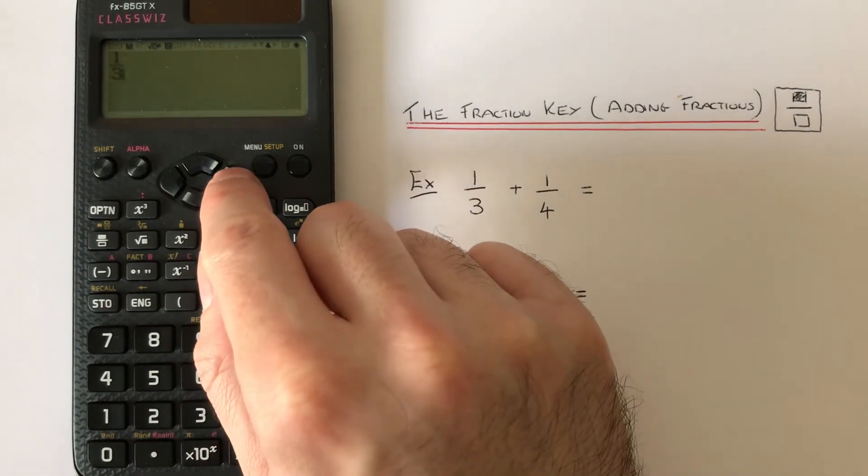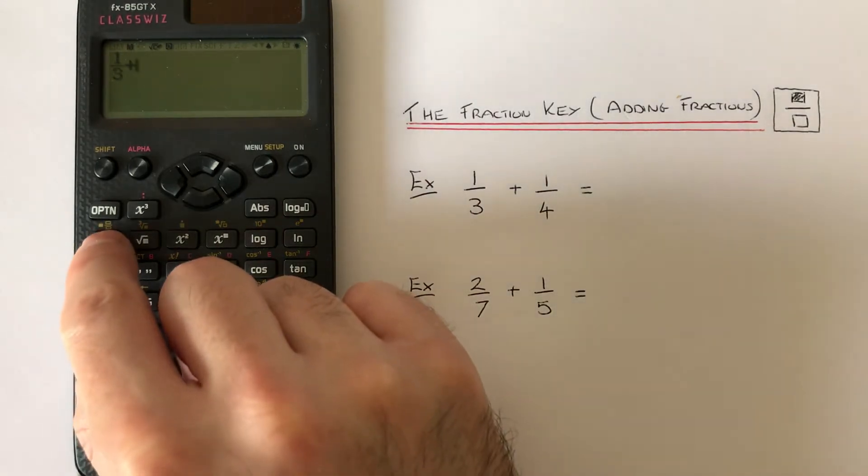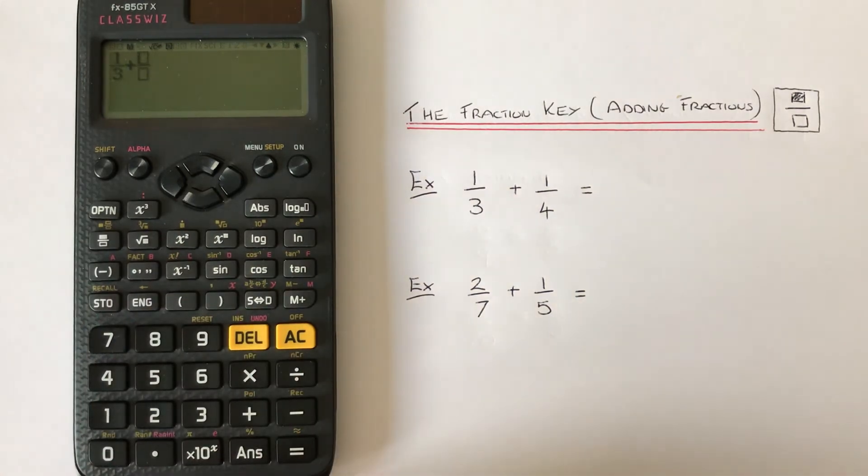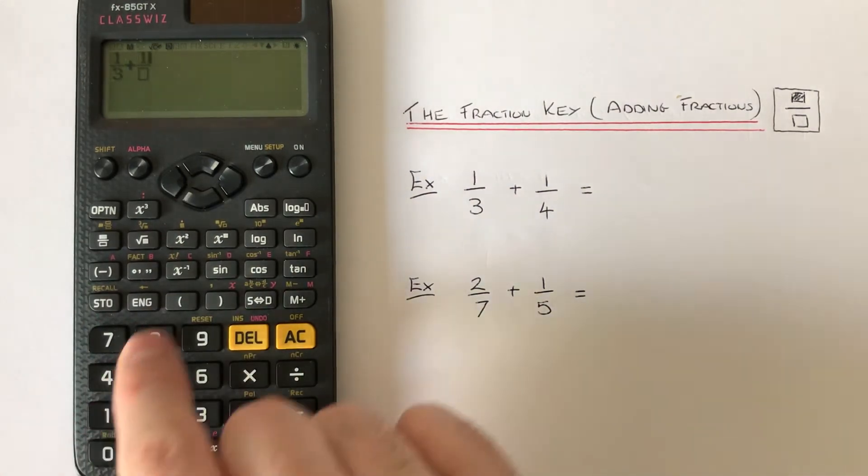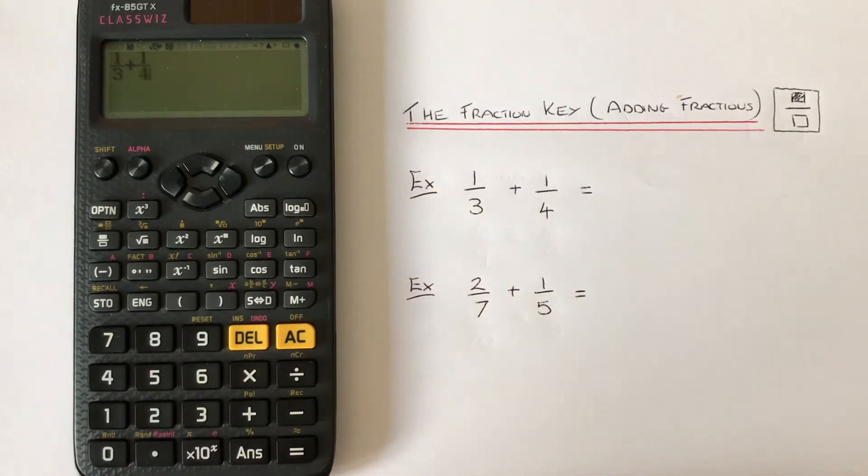Then hit the right cursor again, press the addition sign and then press the fraction key to type in the second fraction. We've got one and the right key and four. As you can see we've typed in exactly as it is on the page.